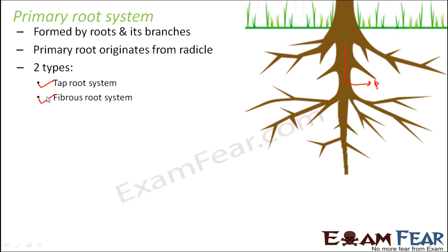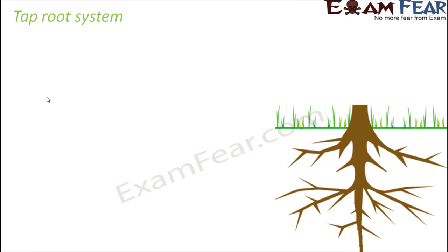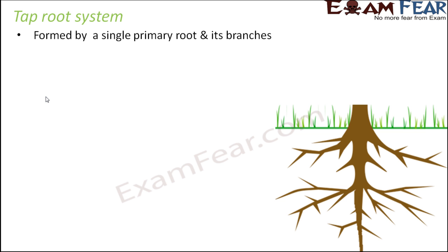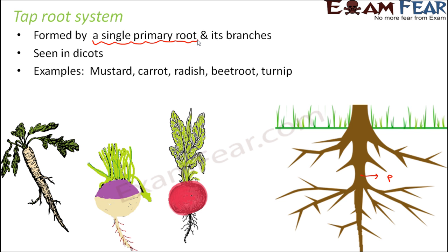Let us talk about tap root first. This kind of root system is formed by a single primary root and its branches. You can see the single primary root and the branches arising from it — that is the tap root. The key feature is a single dominant primary root. This root system is generally seen in dicots, that is, dicotyledonous plants — those plants where the seed has two cotyledons, which are the seed leaves.